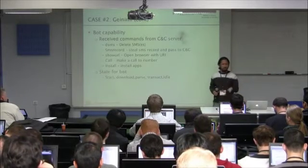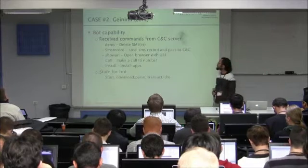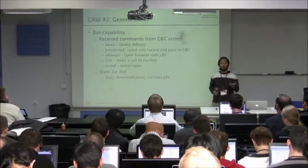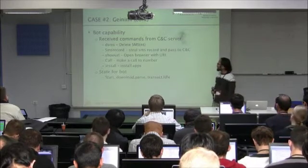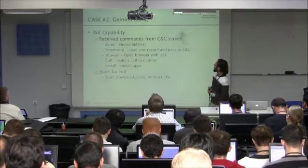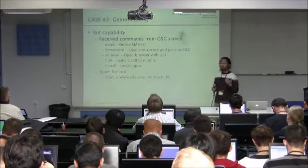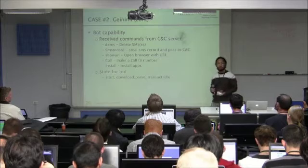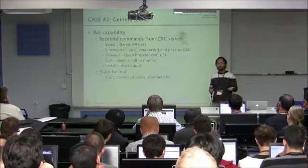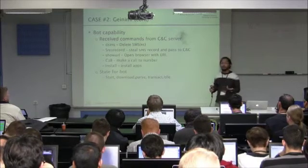G&B has bot capability — it can receive commands from the CNC server. Commands include: 'dsms' to delete SMS, 'SSM record' to steal SMS records, 'Show URL' to open a URL, and 'call' to make a phone call. It also supports installing applications. It also has states for the bot: start, download, pass config instructions from the CNC, and also an idle state.